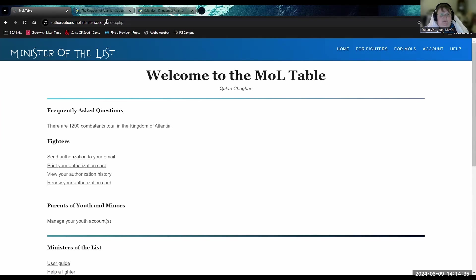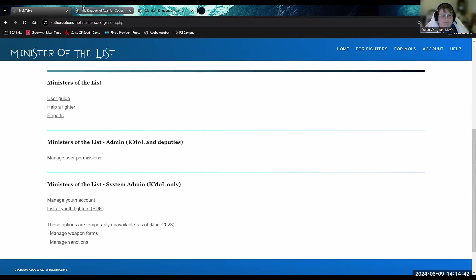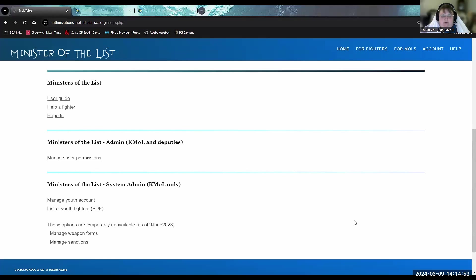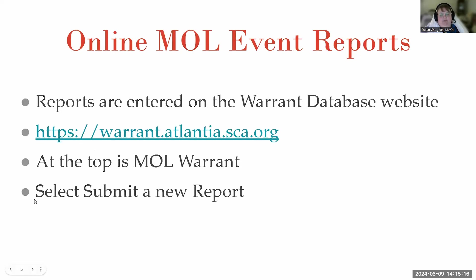A simple way to put it: use the drop-down menus and hit Submit, which sends an email to the fighter notifying them their card has been updated so they know to reprint it. But what if the person does not have an AEL? If you can't find someone's name, you need to contact the fighter to confirm their information, or contact the KMOL for assistance. A new person to the SCA may not have created an AEL yet.